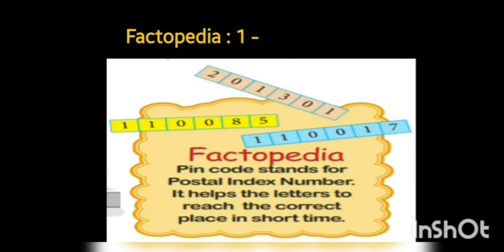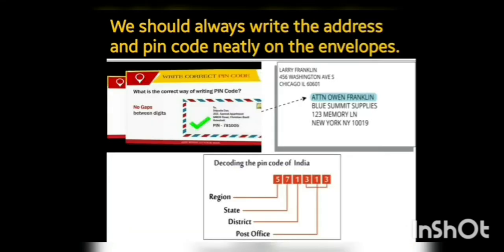Now, an important thing to know is about the PIN code. PIN code stands for Postal Index Number — P as in Postal, I as in Index, N as in Number. It helps letters reach the correct place in a short time. Looking at the six-digit code: the first digit tells us about the region, the second about the state, the third about the district, and the last three digits tell us about the post office. With the help of all these, the postman can easily identify the correct address and deliver letters to the right person.